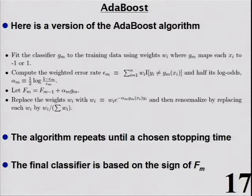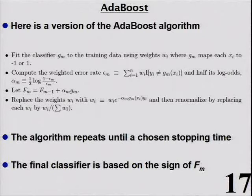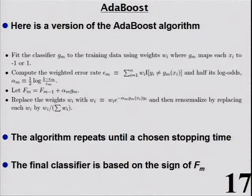Stage two is interesting: I go back and refit a new four-node tree to the training data, but using updated weights. The key is the weight update: new weights = old weights × exp(-alpha × g × y). This upweights points the classifier got wrong. If g and y disagree in sign, exp is large — high weight. If g and y agree in sign, exp is small — low weight.